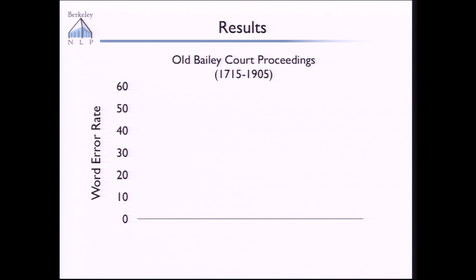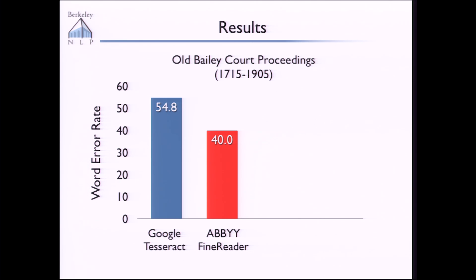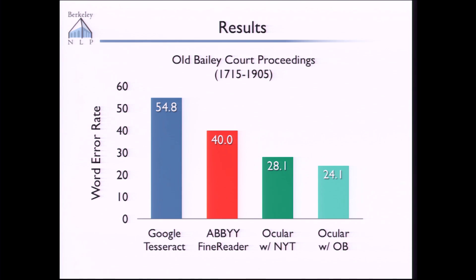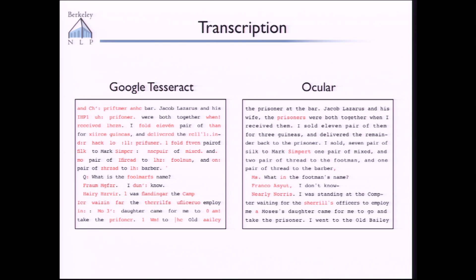Now let me show you some results. This is word error rate, so bigger bars are worse. On a corpus of documents from the Old Bailey courthouse proceedings: Google Tesseract gets a word error rate of 54.8 — pretty bad, more than half the words wrong. A state-of-the-art commercial system called ABBYY FineReader does a bit better at a word error rate of 40. Our system, which we're calling Ocular, gets a word error rate of 28.1 when trained with an out-of-domain language model using New York Times text, and 24.1 with an in-domain language model — that's more than a 50% relative reduction compared to Google Tesseract. Here's the transcription of the original example from Tesseract, and here's the output of our system — the legibility has gotten quite a bit better.